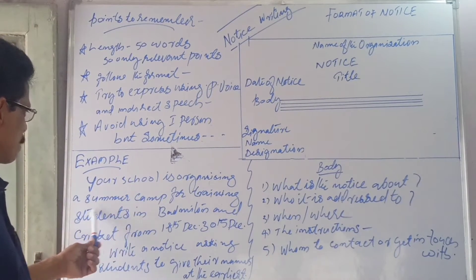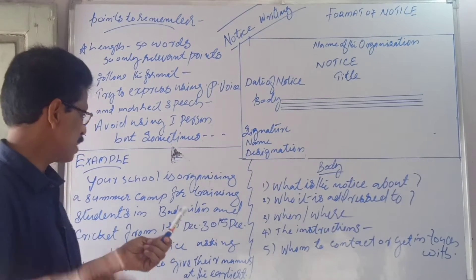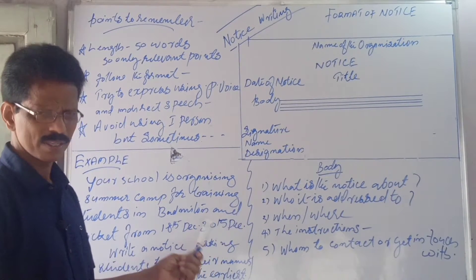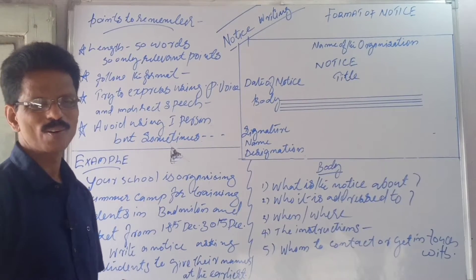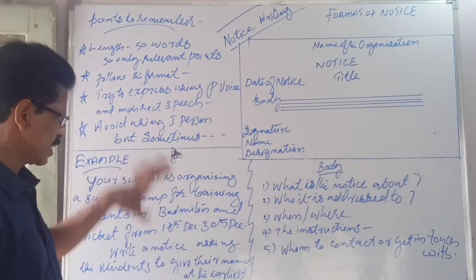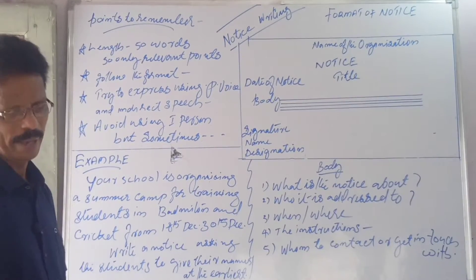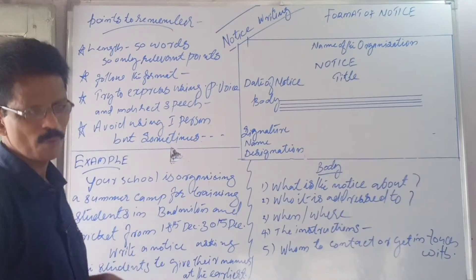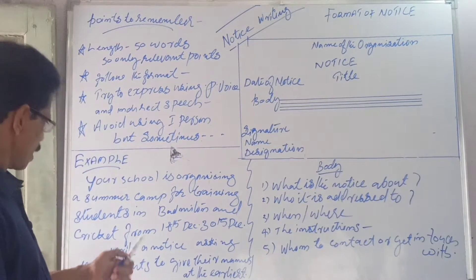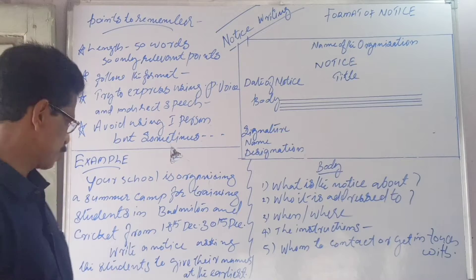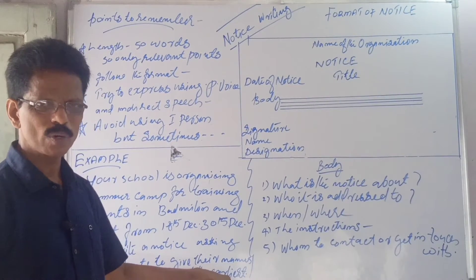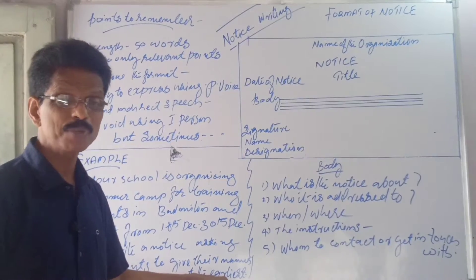For example: your school is organizing a summer camp for training students in badminton and cricket from 18th December to 30th December in the school campus. Write a notice asking the students to give their names at the earliest. So you are asked to write a notice asking the students to give their names at the earliest.